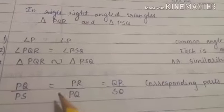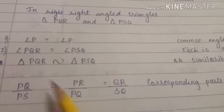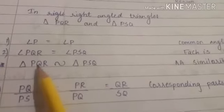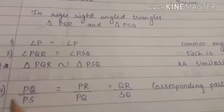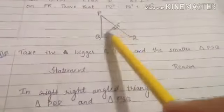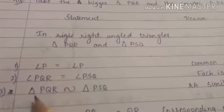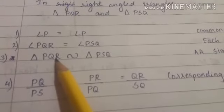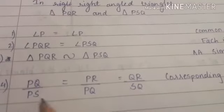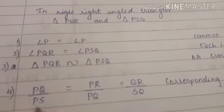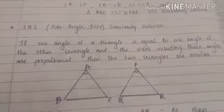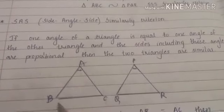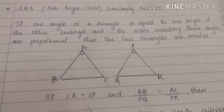When two triangles are similar, their corresponding sides are in the same ratio. The order of naming matters for identifying corresponding sides. In triangle PQR and triangle PSQ, the letters are numbered 1-2-3 in each name. So PQ corresponds to PS — both are the first and second letters of their respective triangle names. Similarly, QR corresponds to SQ, and PR corresponds to PQ.